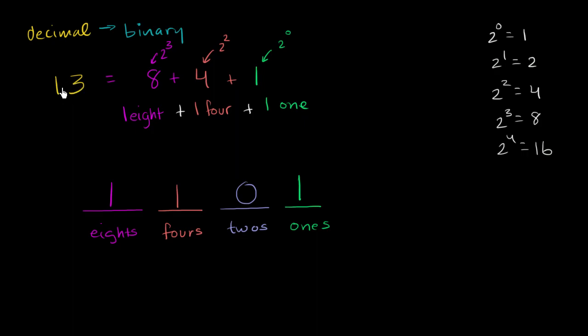So 13 in decimal, if I were to write it in binary, is 1, 1, 0, 1.